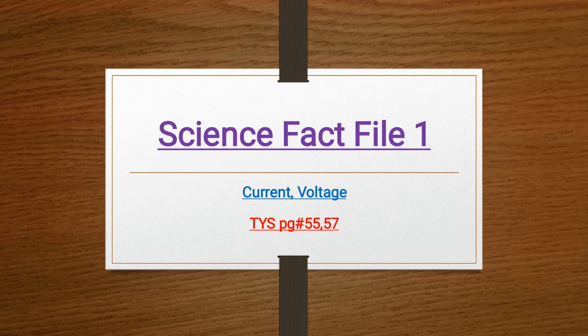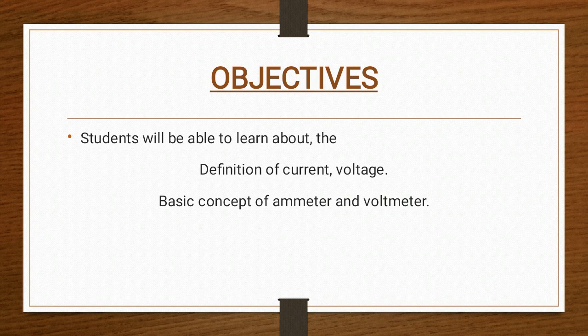Welcome students, hope you all are fine and doing good. This is going to be your Science Fact File, Class One. In this class we will talk about page number 54 and 55, containing the topic of current and voltage. We will also discuss the test yourselves related to our previous topic on page number 55 and 57. After this class you will be able to define current and voltage, and get basic concepts about ammeter and voltmeter — what they are, what their function is, and how they are connected in a circuit.